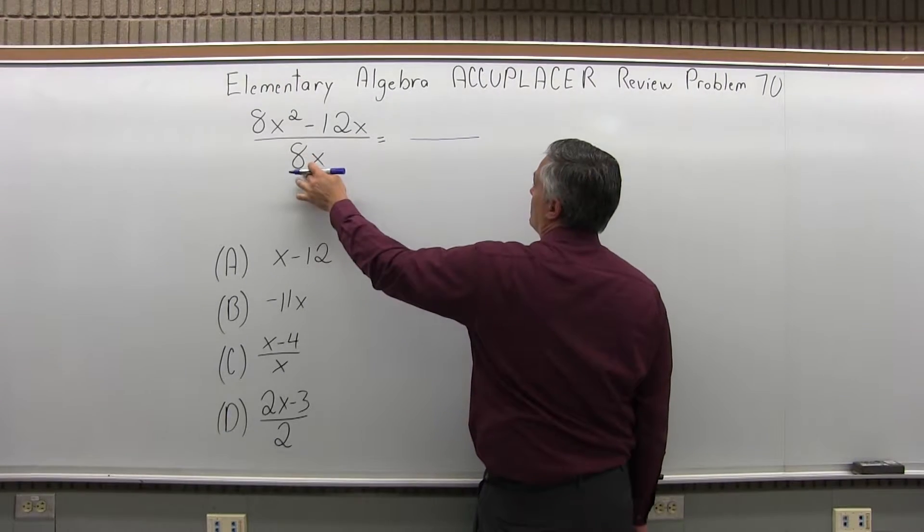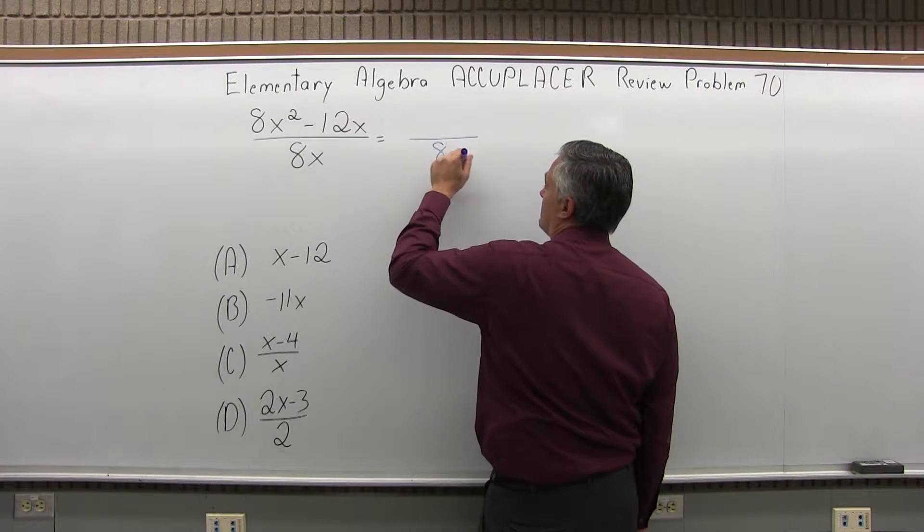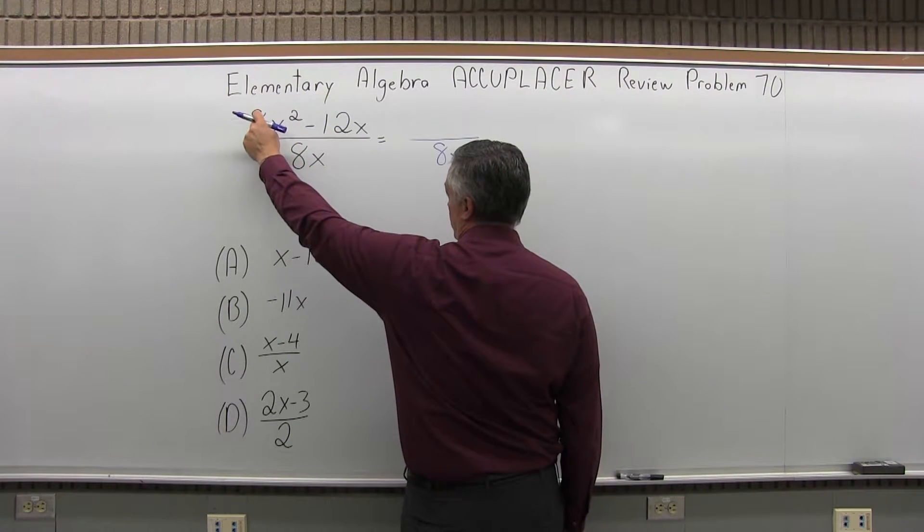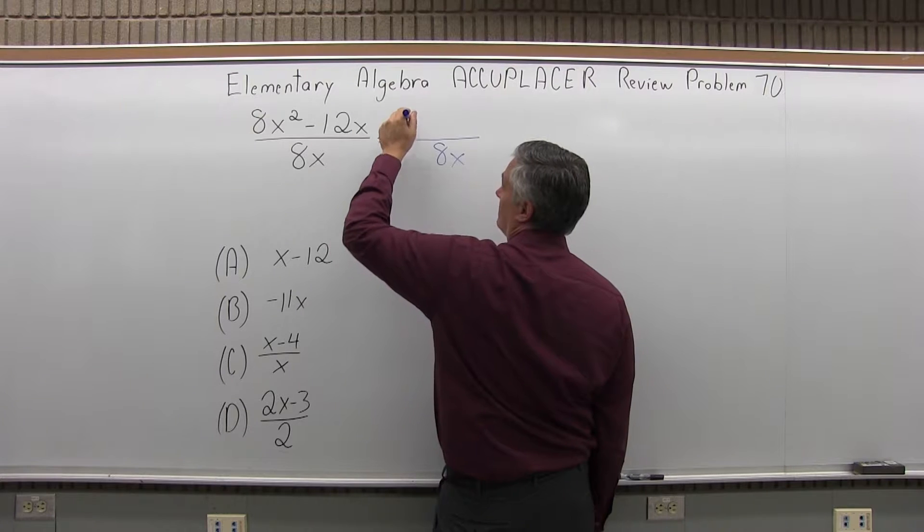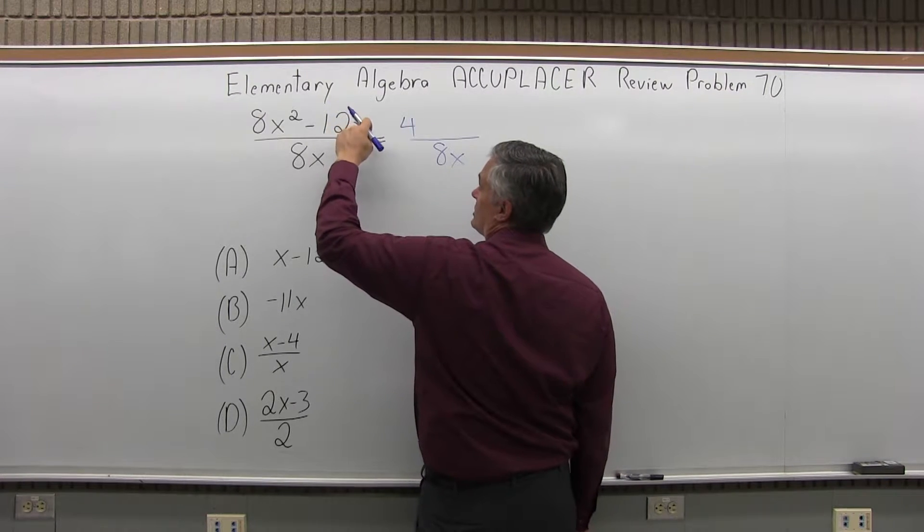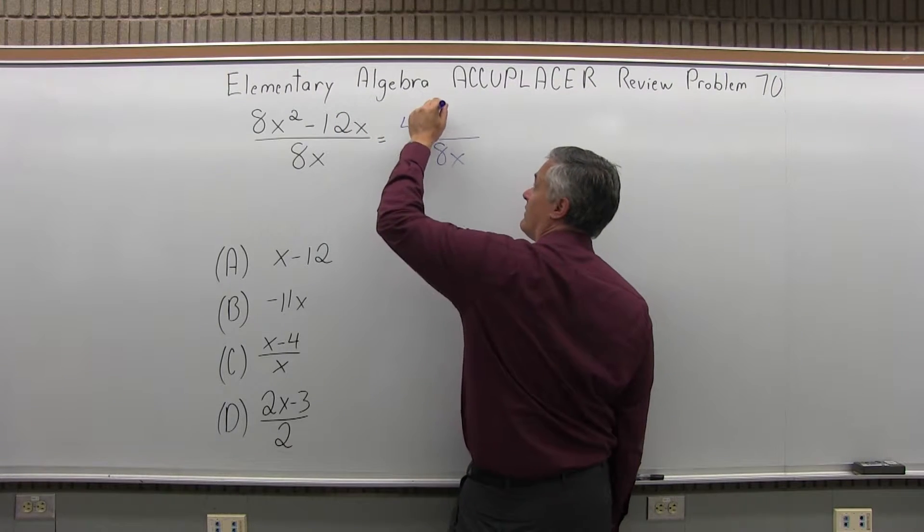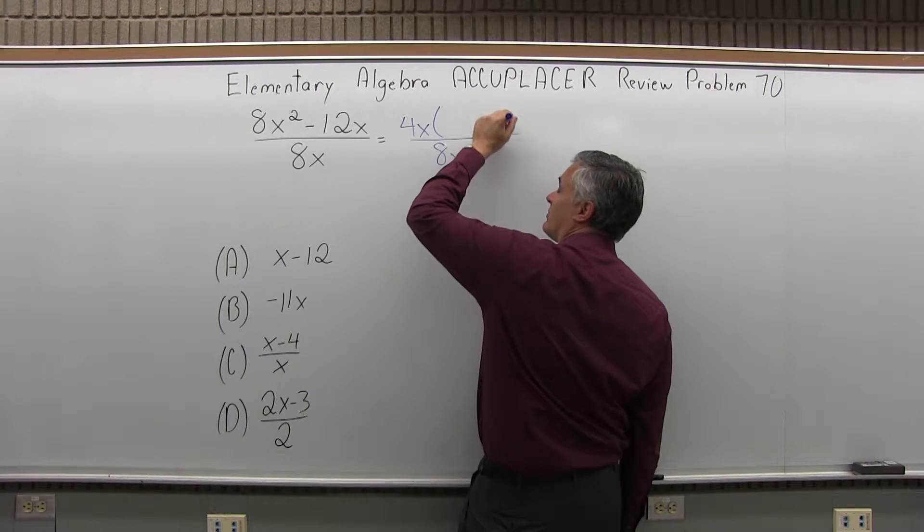There's not much to factor on the bottom with the 8x, so I'll leave 8x. On top, I can take out a 4 from each piece - 4 comes out of 8 and 12. I can also take an x out of each piece - x comes out of x squared and x. So I'll have 4x and make parentheses.